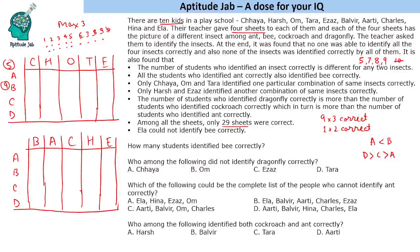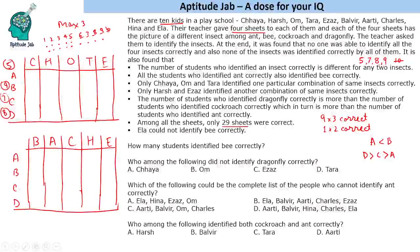Now, dragonfly is greater than cockroach. So dragonfly will be 8 and cockroach will be 7. The main challenge in this puzzle is first finding out these numbers — 5, 7, 8, 9 — and then determining which insect gets which number.